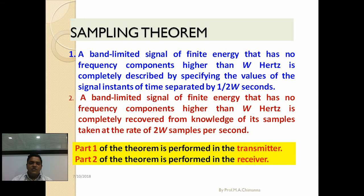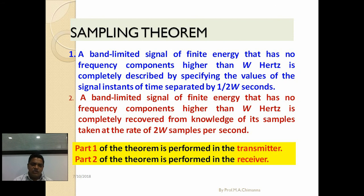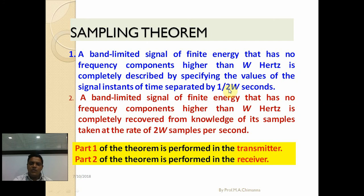The first part is that the band-limited signal of finite energy has no frequency component higher than W hertz. For the transmitter side, the input analog signal has a frequency component not higher than W hertz, which is completely described by specifying the value of the signal at instants of time separated by one upon two W seconds.